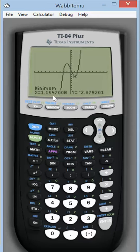And the calculator displays the x coordinate of the local minimum and the y coordinate there. So this local minimum is at x equals, well, x is roughly 1.15, and the value of the local minimum is roughly negative 2.08.